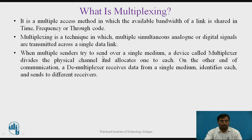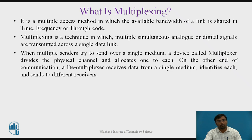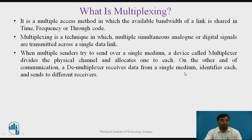Multiplexing is a technique in which multiple simultaneous analog or digital signals are transmitted across a single data link. When multiple senders try to send over a single medium, a device called a multiplexer is used at the sender site that divides the physical channel and allocates one to each station. On the other end, at the receiver side, the demultiplexer receives data from the single medium, identifies each signal, and sends it to the different receivers.